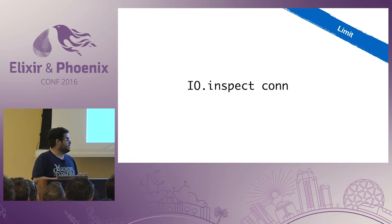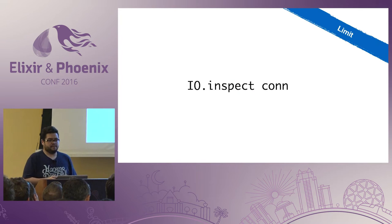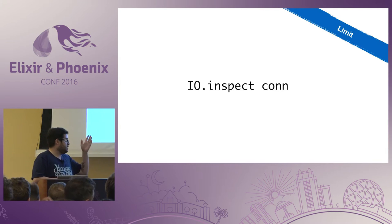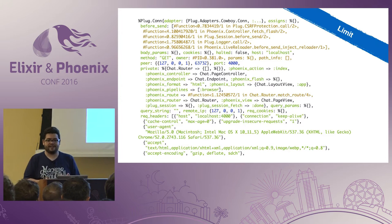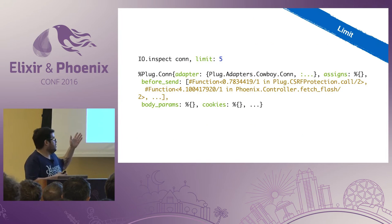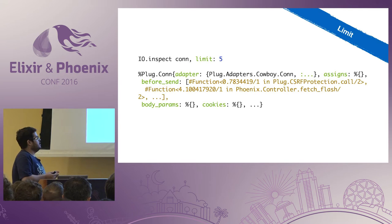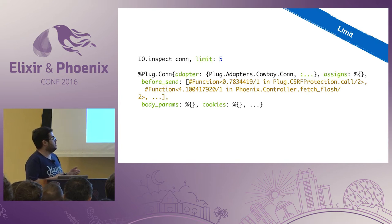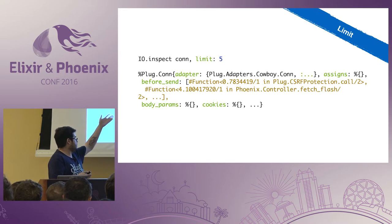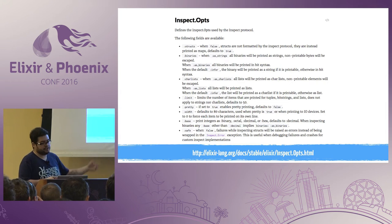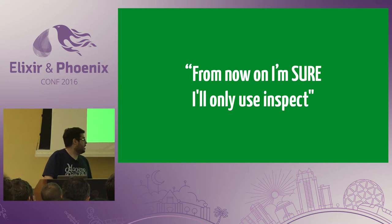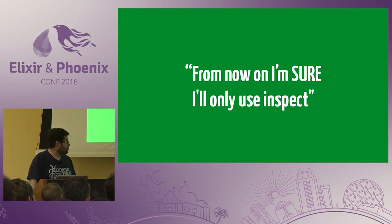Another option we can use in inspect is the limit. When I am debugging a Phoenix application, I usually inspect the connection struct, and we have a lot of information in it. We can use limits to see only what you need. So for example, if I want to see only the assigns, I can use limit 5 and check the information. Inspect has a lot of other options, and you can check them in the documentation. So from now on I am sure that I will only use inspect.